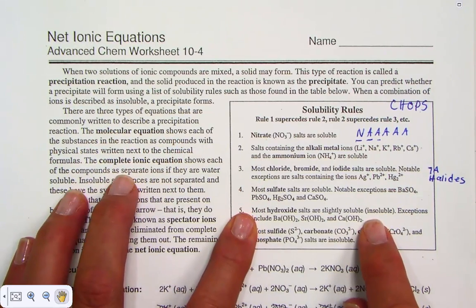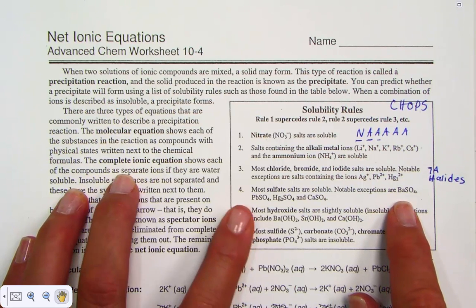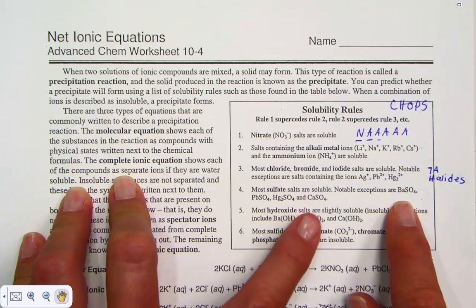Rule four: Most sulfates are soluble except barium, lead, mercury, or calcium.